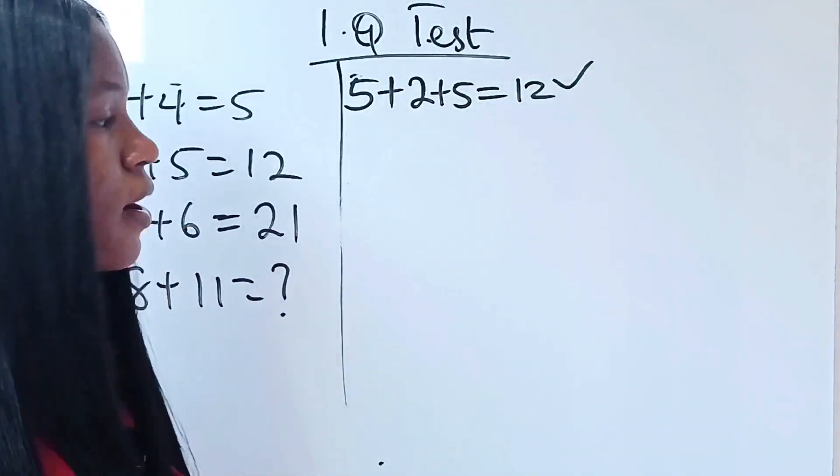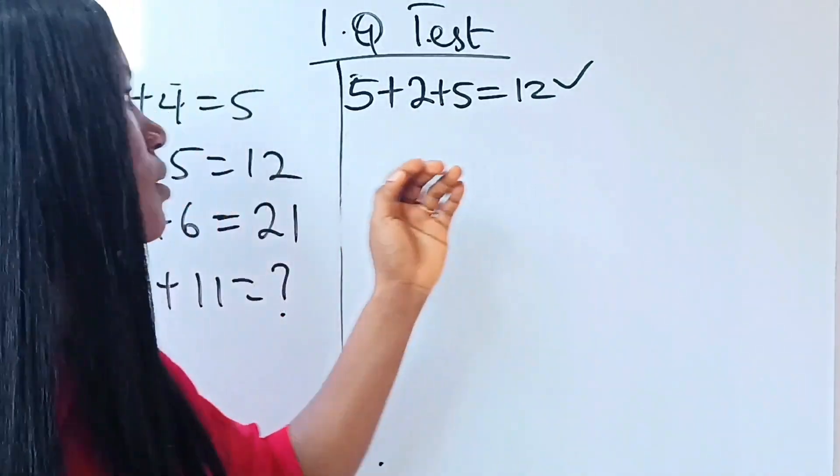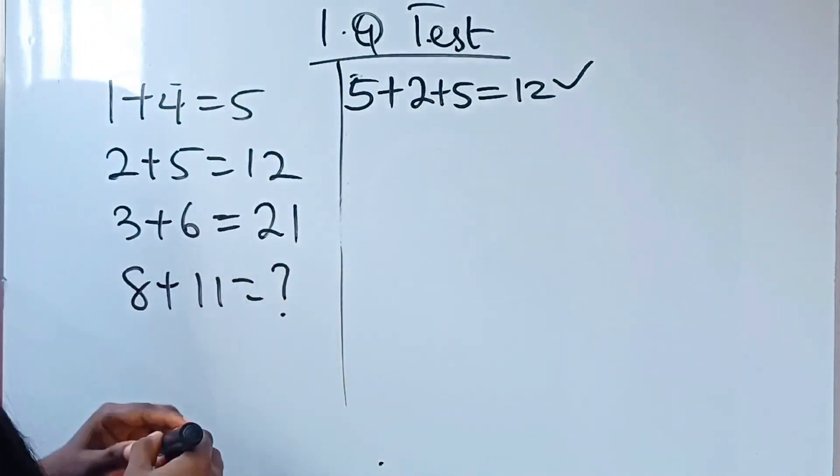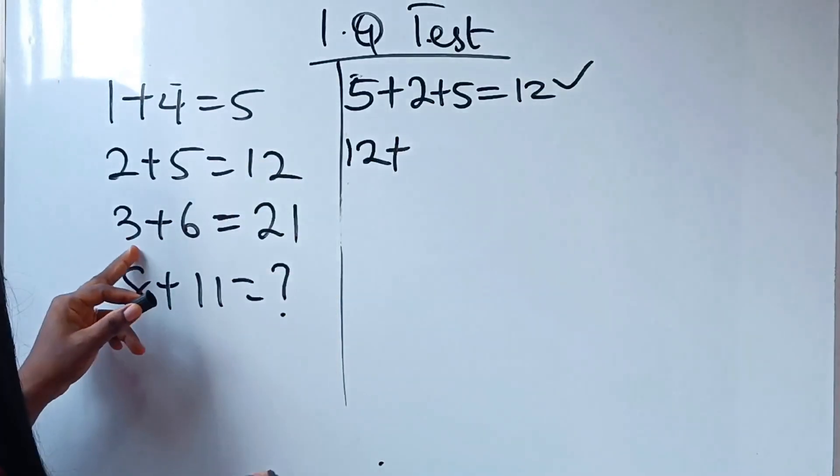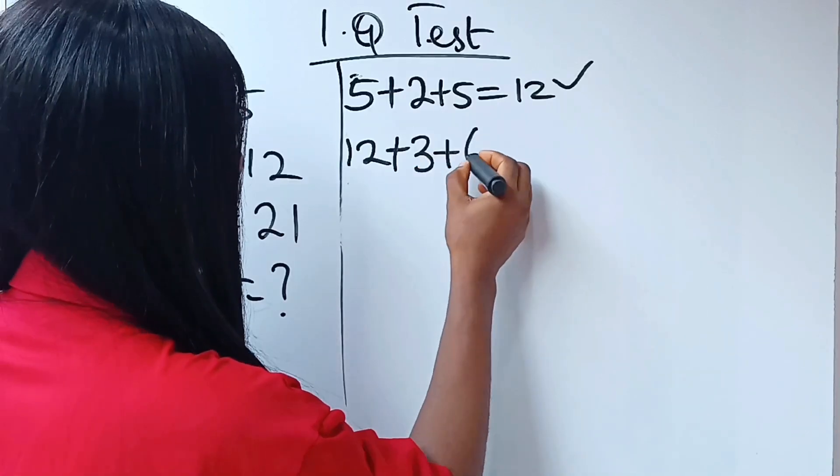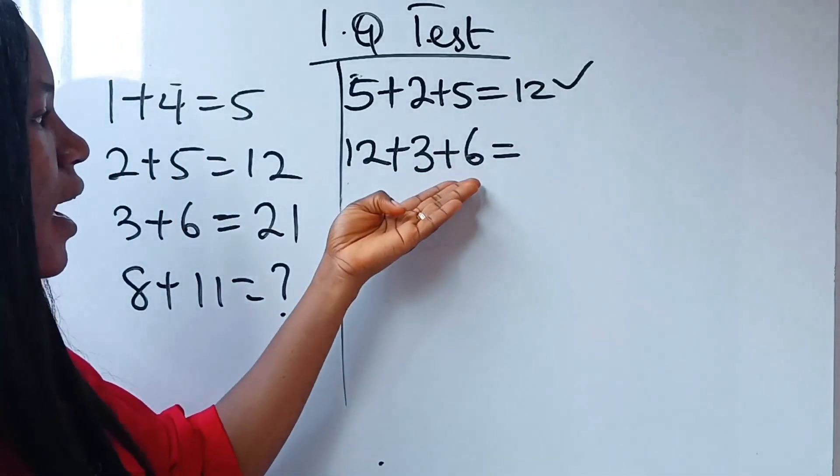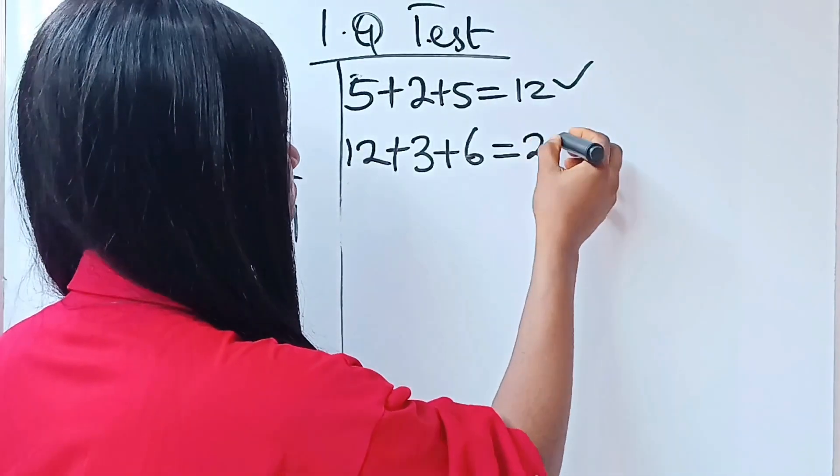Yeah, which is right. Then if we should follow the same pattern, this line is what? 12 plus 3 plus 6. And this is what? 9 plus 12, which is 21.